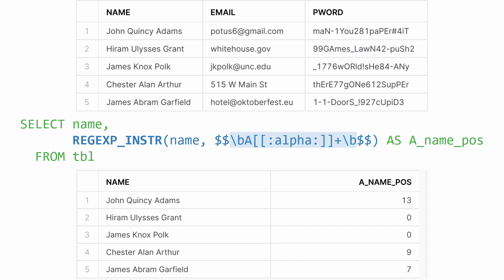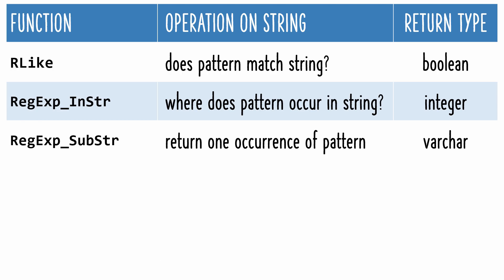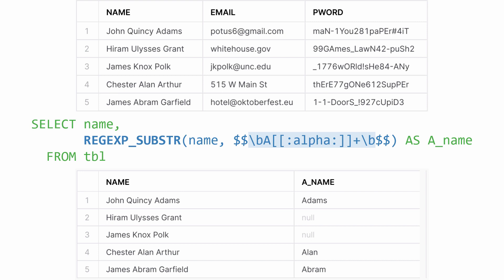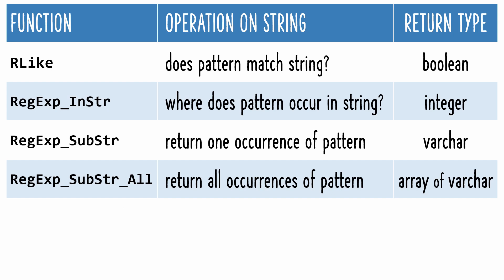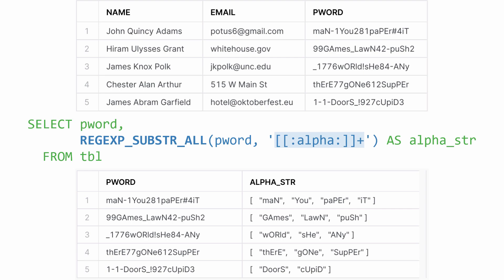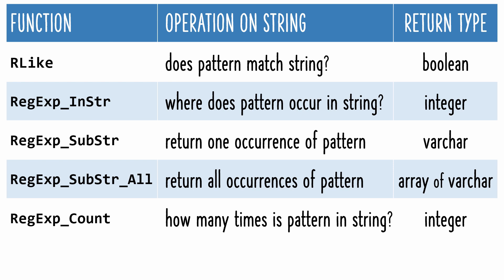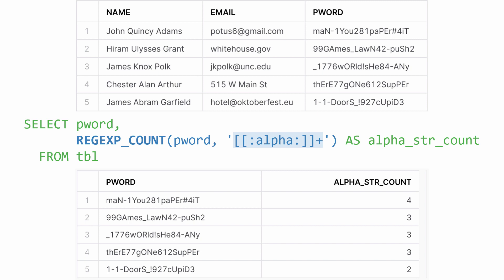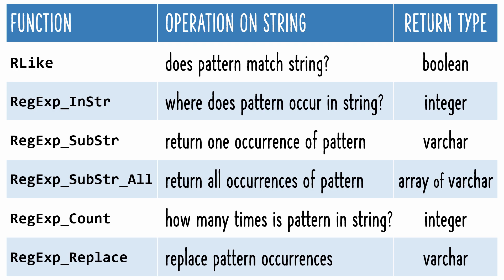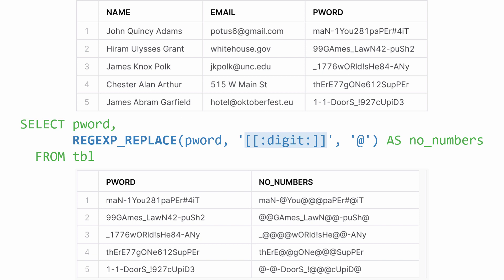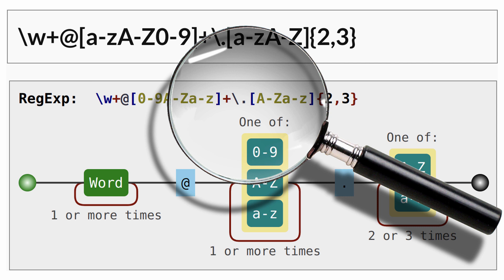Here I'm asking for the start position of names that begin with a capital letter A. The substring function returns one occurrence of a pattern. Instead of asking for the start position, I'm asking for the actual names that begin with a capital letter A. Substring all returns all occurrences of a pattern — here I'm asking for alphabetic substrings, and each one is returned inside an array. The count function tells you how many times a pattern occurs, so instead of returning the value of each substring, it simply provides a count of them. The last function returns the string with pattern occurrences replaced by another value, like here where I essentially masked each number within each password.